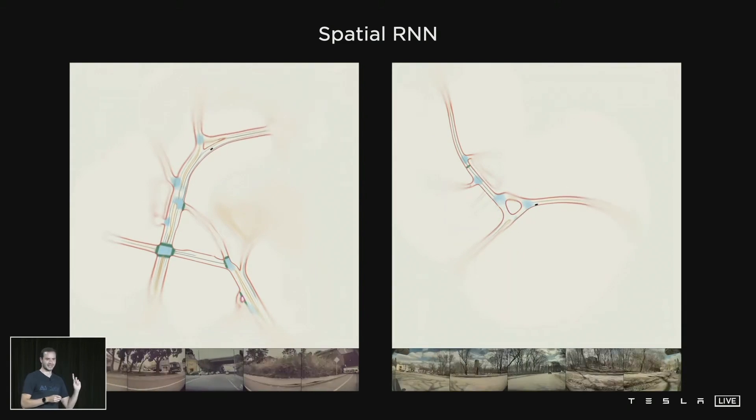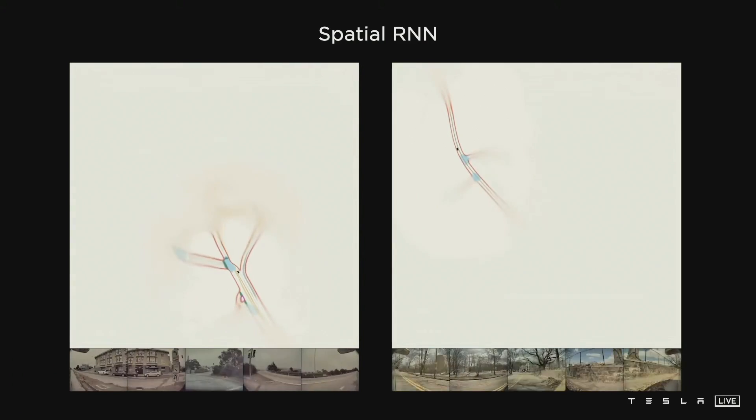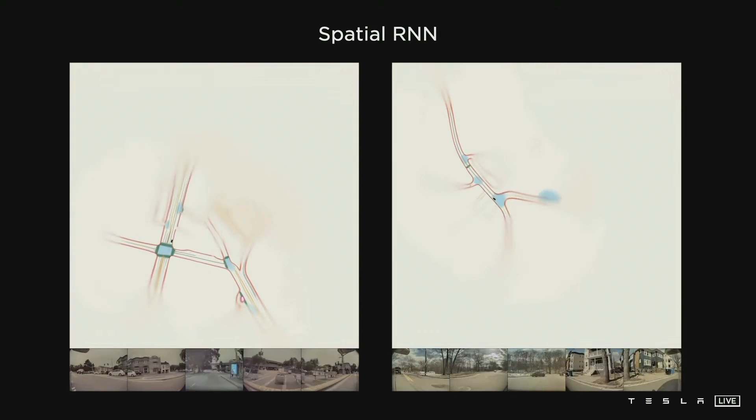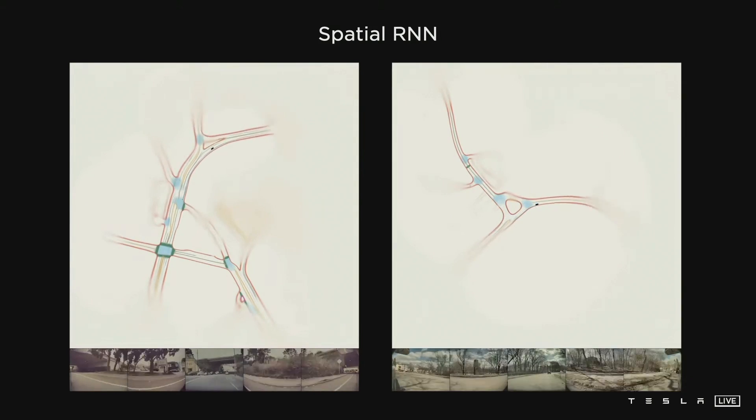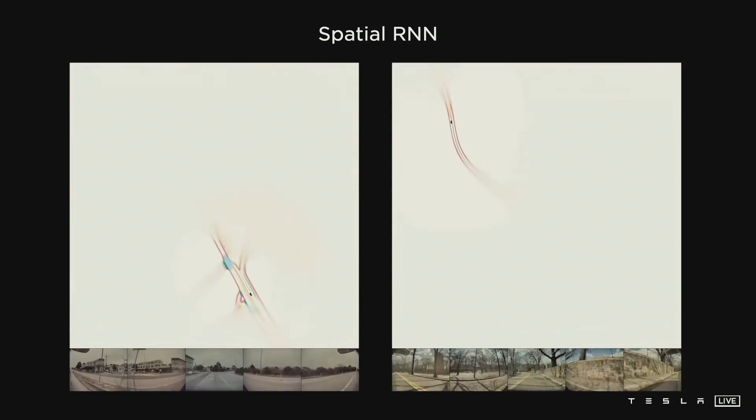This is only showing a single clip, a single traversal, but you can imagine there could be multiple trips through here and basically a number of cars and a number of clips could be collaborating to build this map, basically and effectively an HD map, except it's not in the space of explicit items. It's in the space of features of a recurrent neural network, which is kind of cool. I haven't seen that before.